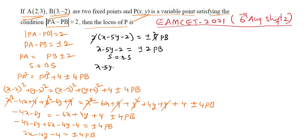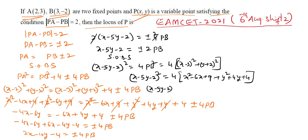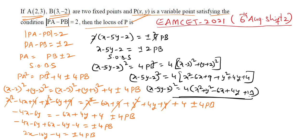Expanding 4PB² = 4[(x-3)² + (y+2)²] = 4[x² - 6x + 9 + y² + 4y + 4]. So the locus is: (x - 5y - 2)² = 4(x² + y² - 6x + 4y + 13). This is the required locus for the condition |PA - PB| = 2.